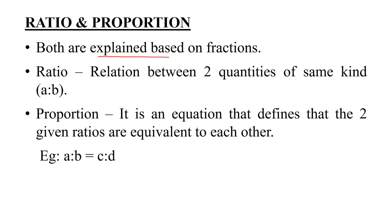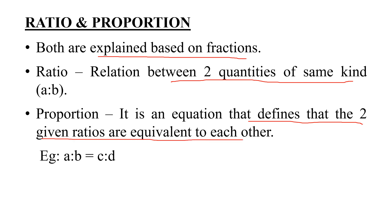We have to explain ratios and proportions. As we know ratios, we represent A by B. A is to B equal to C is to D — that is proportional.